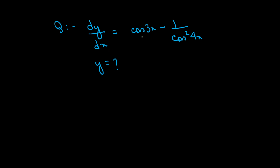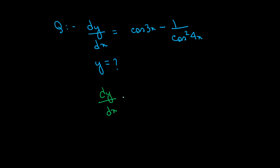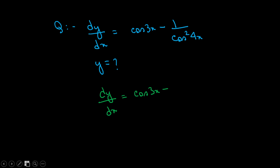dy by dx is equal to cos 3x minus 1 by cos square 4x. So if we want to find y, we can write dy by dx is equal to cos 3x minus 1 by cos square 4x, which can be written as cos 3x minus sec square 4x.